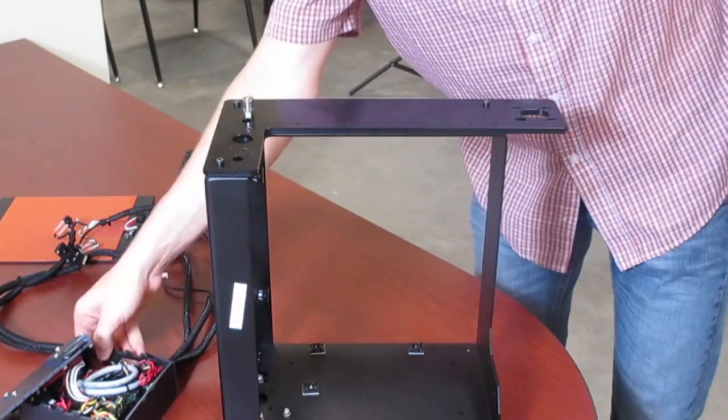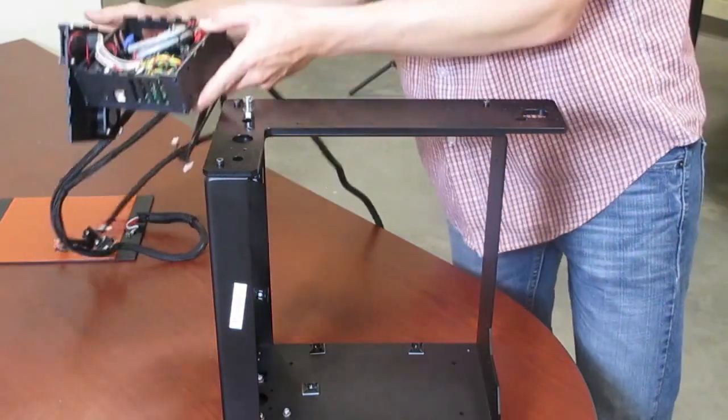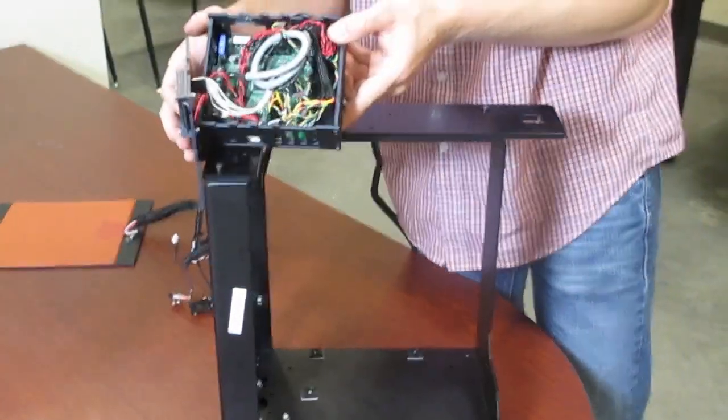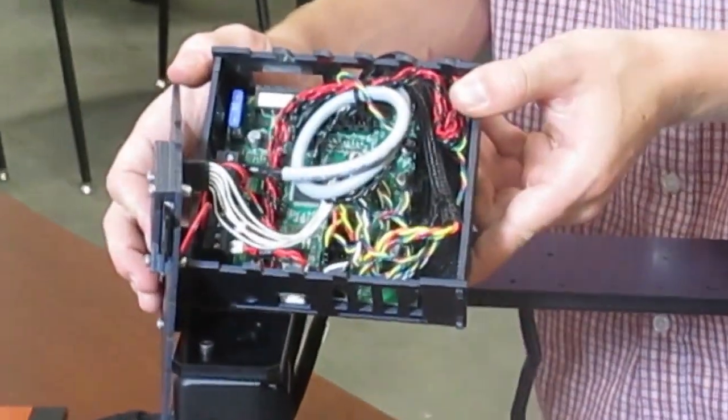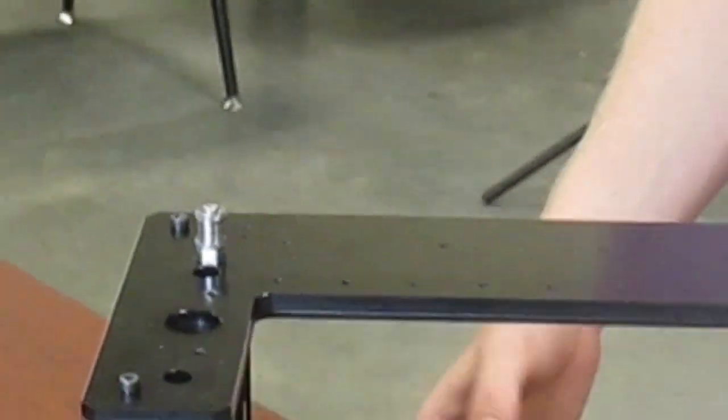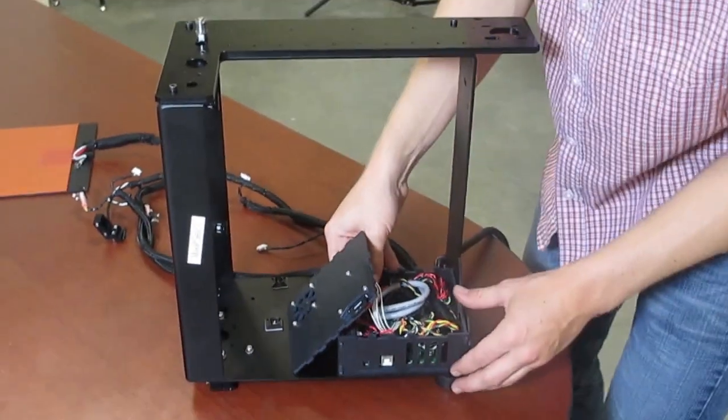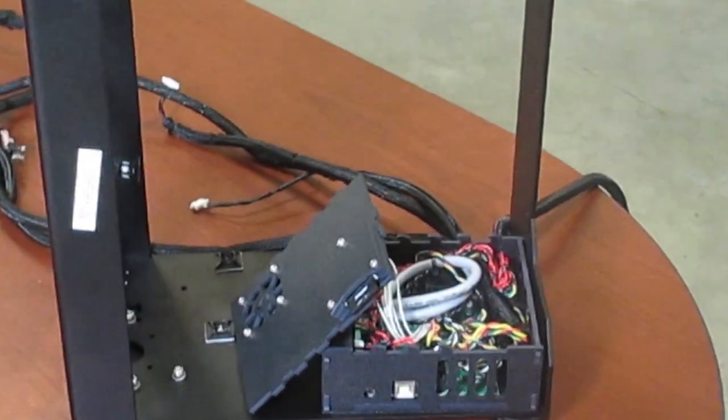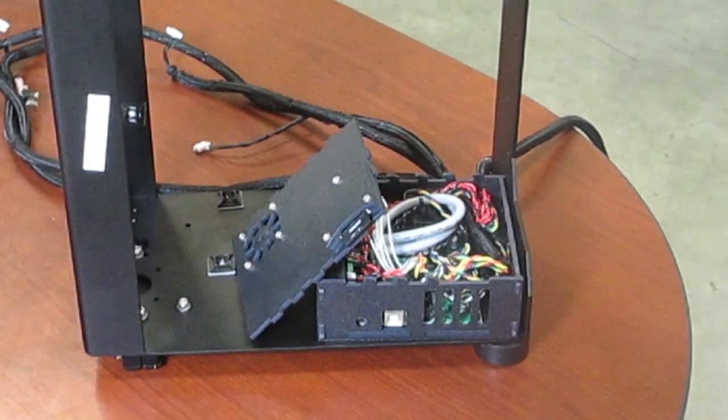We've already pre-assembled our electronics box and we'll leave a link in the description on how to do so. The electronics box slides right in the bottom of your Maker Gear M2. Lines up with the front and there are three M4x16 black anodized screws that hold it in place.